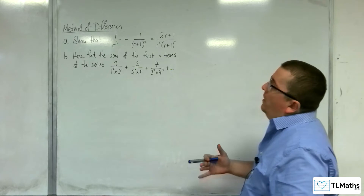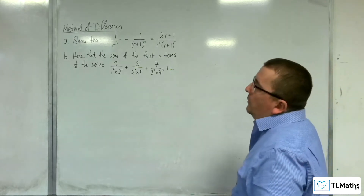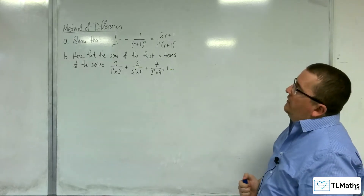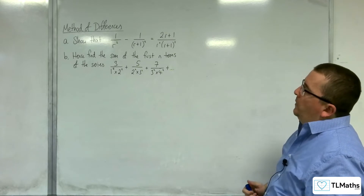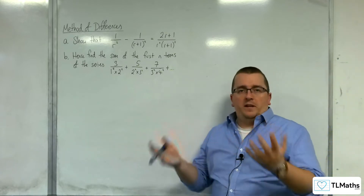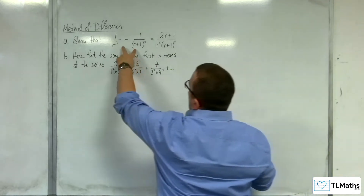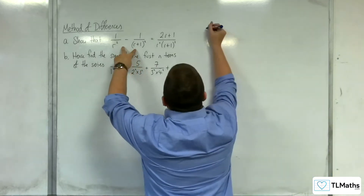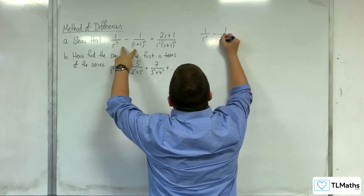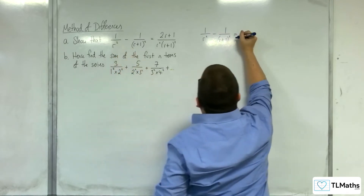In this video we've got part A: show that 1 over r squared take away 1 over r plus 1 squared is equal to 2r plus 1 over r squared times r plus 1 squared. So this is just going to be combining those two fractions together. So 1 over r squared take away 1 over r plus 1 squared — a bit of cross multiplication.